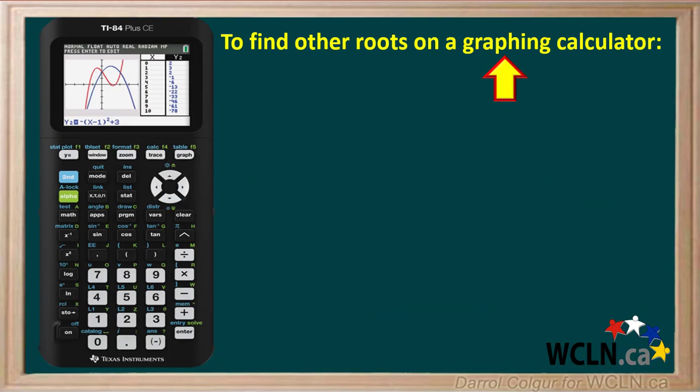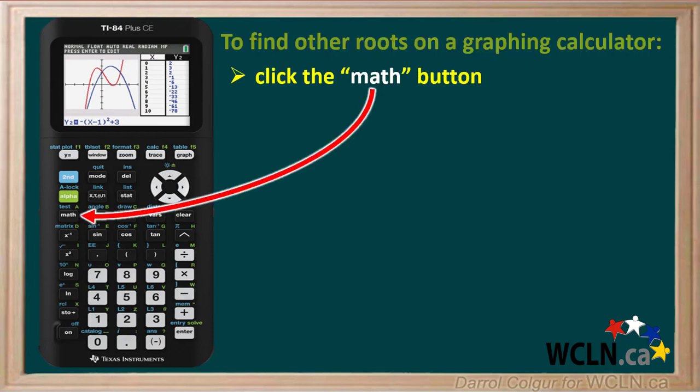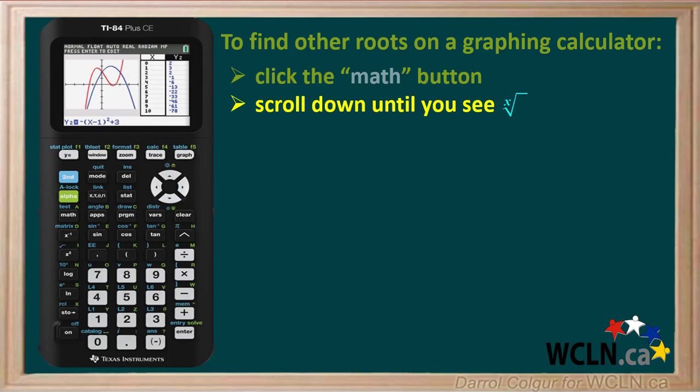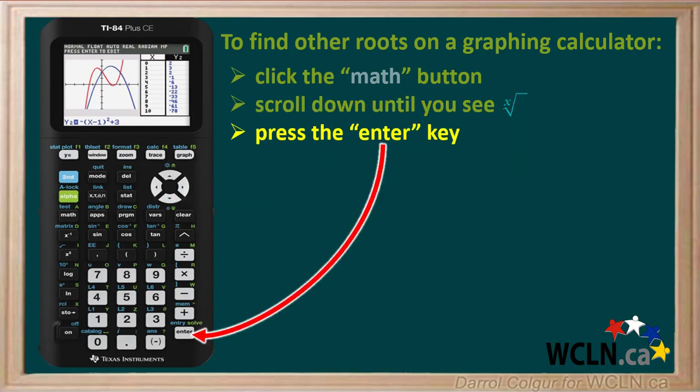To find other roots on a graphing calculator like this one, the TI-84 plus CE or the TI-84 plus, click the math button first. Then use the scrolling down button to scroll down until the Xth root sign is displayed. Then press the enter key.